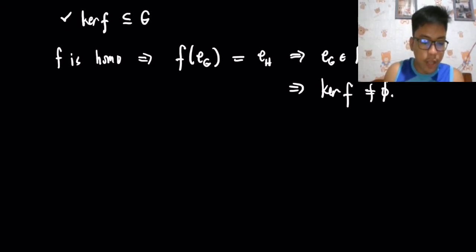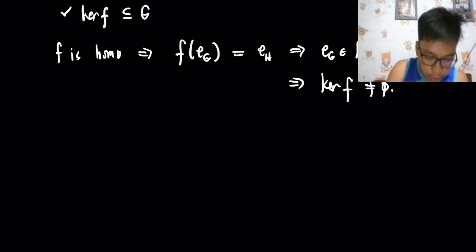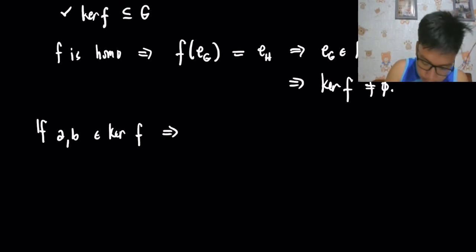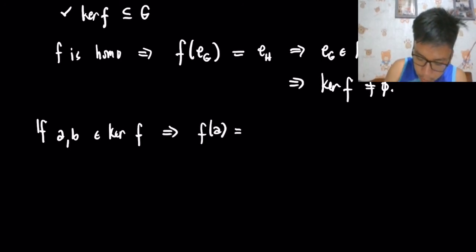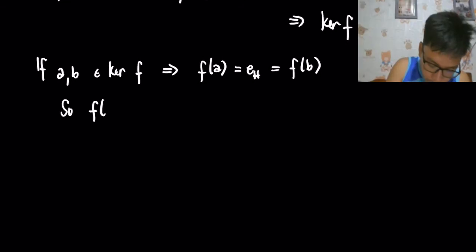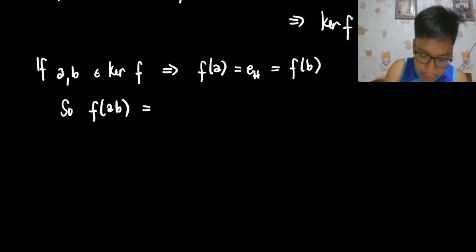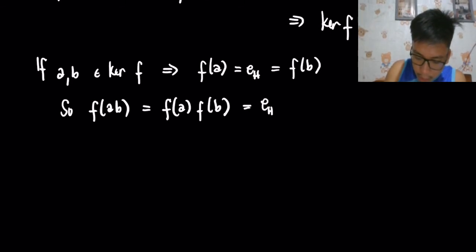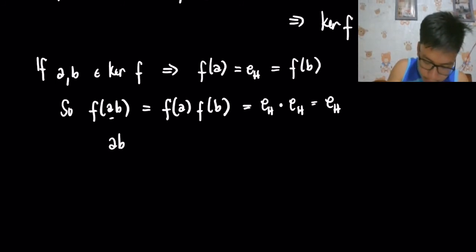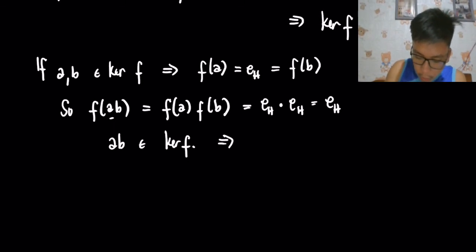Now we check closure under the product. If A and B are elements of the kernel of F, then F(A) = e_H and F(B) = e_H. Since F is a homomorphism, F(AB) = F(A)·F(B) = e_H · e_H = e_H. Therefore AB is mapped to e_H, which means AB is an element of the kernel of F. So the kernel of F is closed under the product.